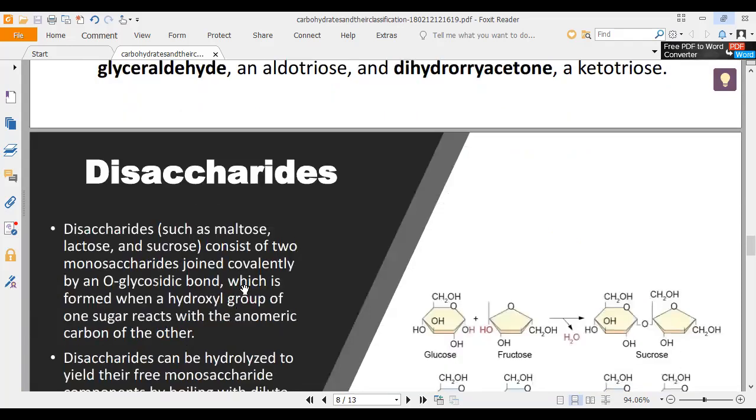Disaccharides such as maltose, lactose and sucrose consist of two monosaccharides joined by an O-glycosidic bond, which is formed when a hydroxyl group of one sugar reacts with the anomeric carbon of the other.